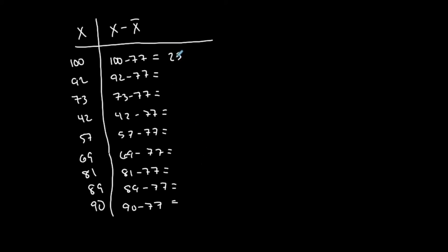Okay, so we have 23, 15, negative 4, 42 minus 77 is negative 35, negative 20, negative 8, 4, and last but not least, 13. Okay, so all right, this is all these data values minus the mean, and I have to do them separately.